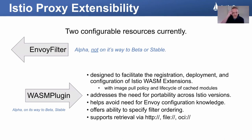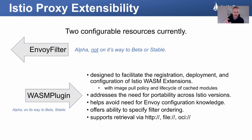There are nice enhancements that WasmPlugin brings as a resource: doing filter chaining and specifying the order in which you'd like those filters to operate. There are additional ways to retrieve the filters through protocols other than just file, which is the only one EnvoyFilter supports. If you think about the lifecycle management of a Wasm plugin, there are concerns like: what version are you using? How is that Wasm plugin image — that small binary — distributed? Is it cached? Is there an image pull policy? Yes, there is an image pull policy in Istio using WasmPlugin. Like any powerful feature, you've got to be knowledgeable about how you're configuring these things.